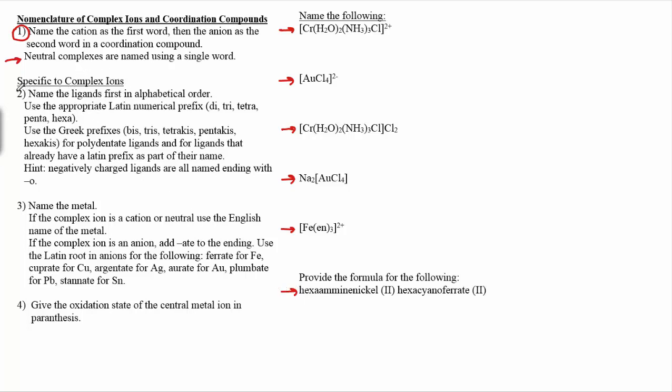So rules two through four here are going to be specific to complex ions. We're going to name the ligands first. We'll name them in alphabetical order. We'll use Latin numerical prefixes to tell how many of them there are. One hint here given is any negatively charged ligands will end with the letter O in how we name them. So it turns out the ligands all have special names. Water's aqua and ammonia's amine.